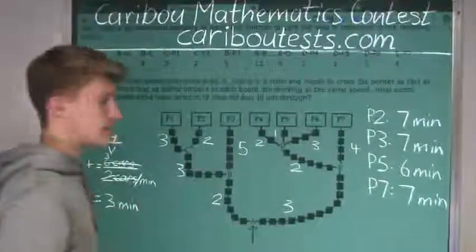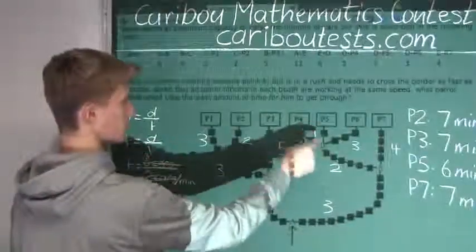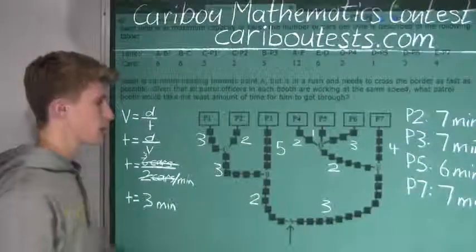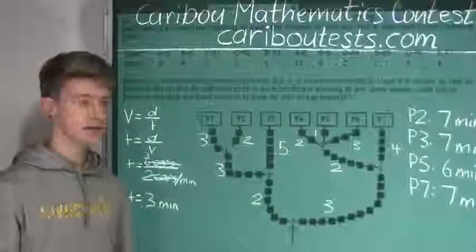So we can see that it takes the shortest amount of time to get through the booth P5. So therefore, we know that P5, the booth P5, is the fastest lane.